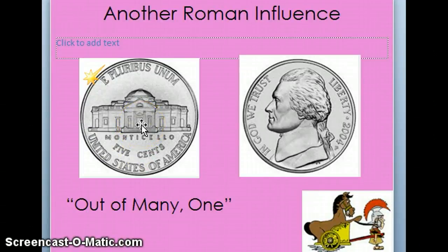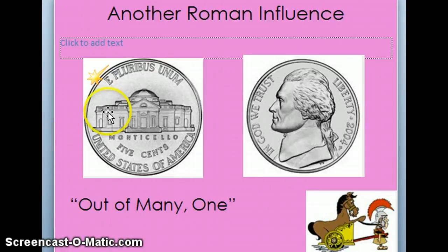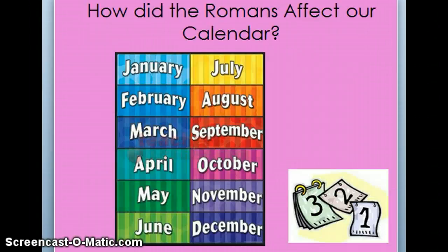If you look at this building, this is another Roman influence in architecture — the way buildings are built. This was the home of Thomas Jefferson, our third president, and he loved Roman architecture. He also had a contest to design the White House. We got the tradition of having leaders on money from the Romans. He loved that Roman architecture — obviously, because his home looked like Roman architecture too.